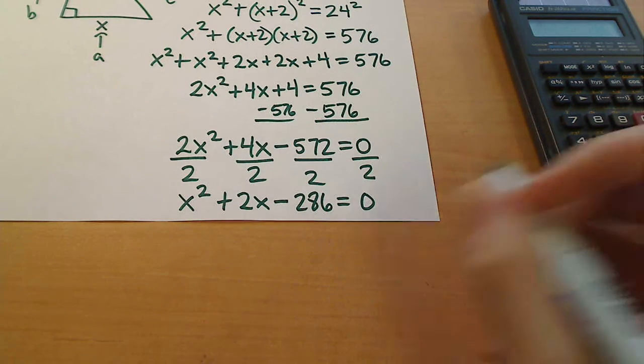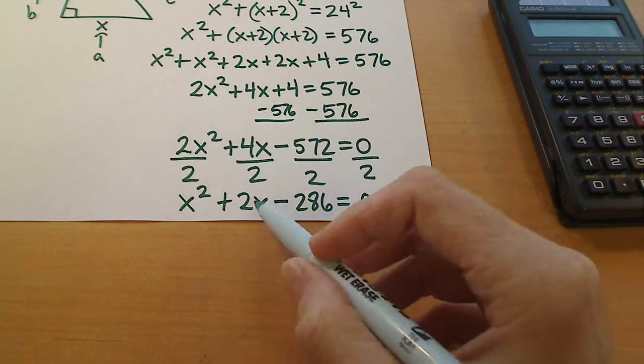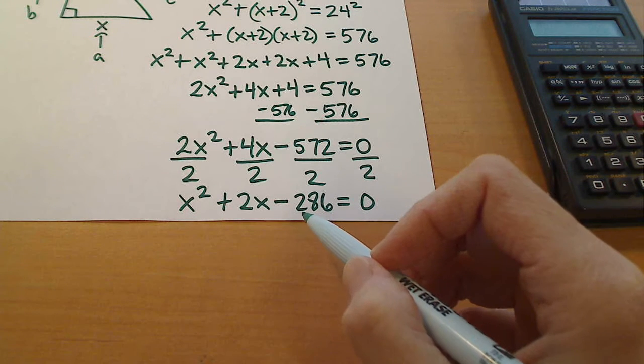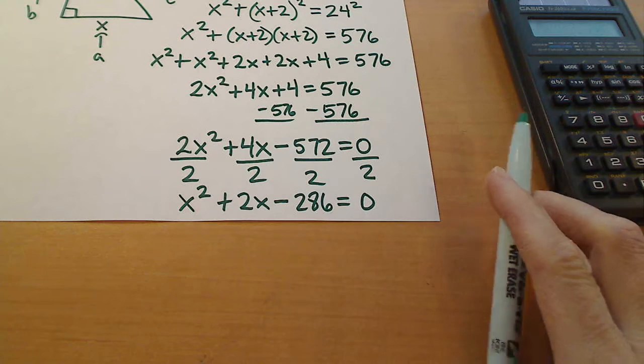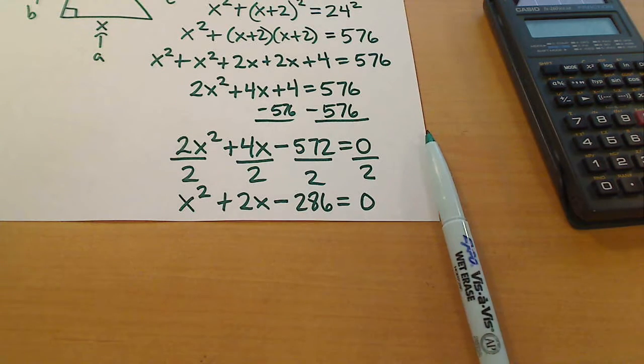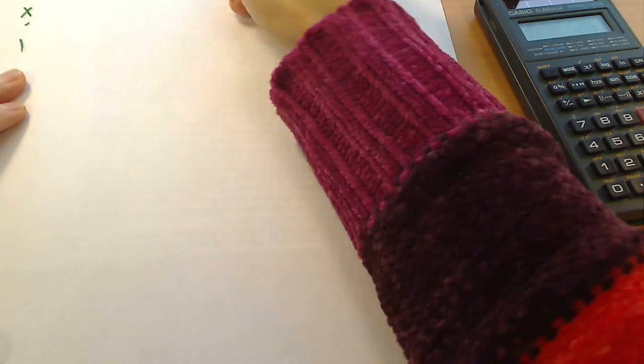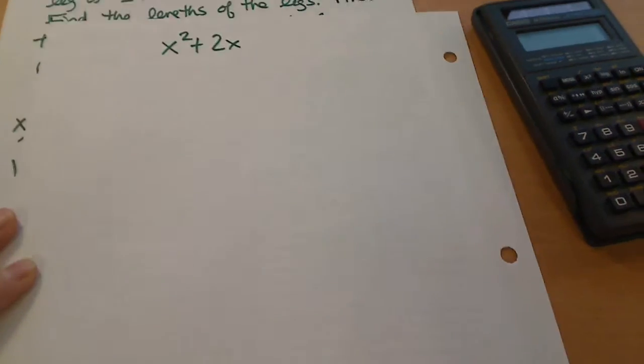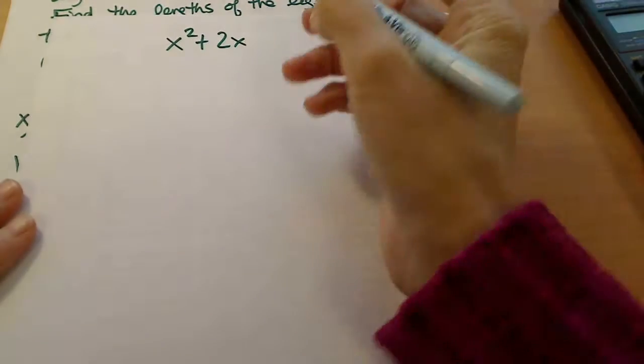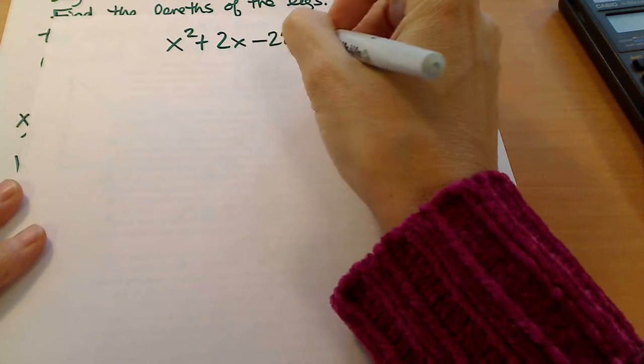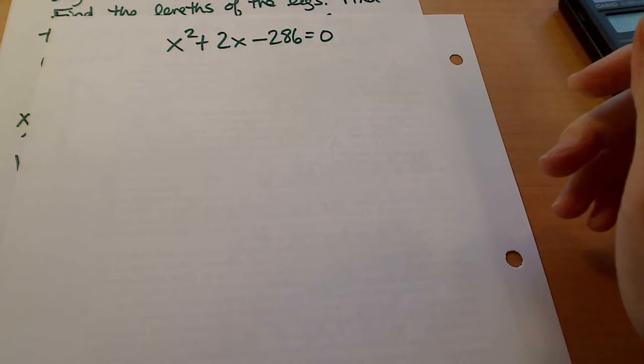Now you can try factoring that, but I don't think it's going to factor. Even if it did factor, we can still put it into the quadratic formula and solve it that way, and I think that's the way I'm going to solve it. Let me grab another piece of paper. So this is x squared plus 2x and then minus 286 equal to 0.